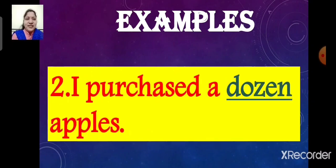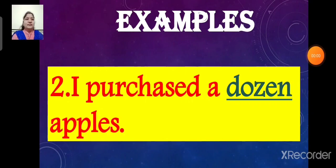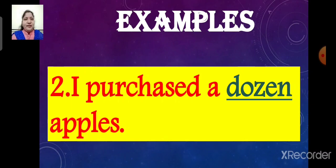I purchased a dozen apples. Here, the underlined word is dozen. So the word dozen is an adjective. It describes the noun apples. It tells us how many apples were purchased. So the word dozen is an adjective of number.